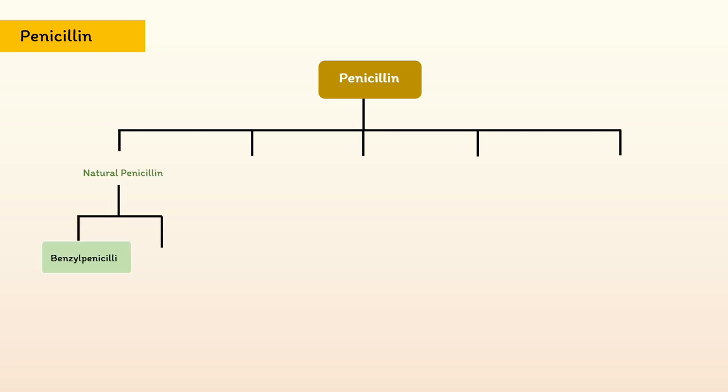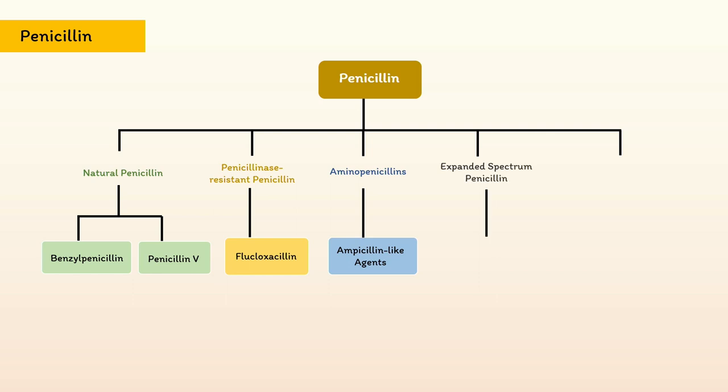Overall, penicillins now include natural penicillins, for example benzyl penicillin or penicillin G; penicillinase-resistant penicillins, for example flucloxacillin; aminopenicillins, for example ampicillin-like agents; expanded spectrum penicillins, for example piperacillin; and penicillins combined with beta-lactamase inhibitors, for example amoxicillin and clavulanate, also known as co-amoxiclav.